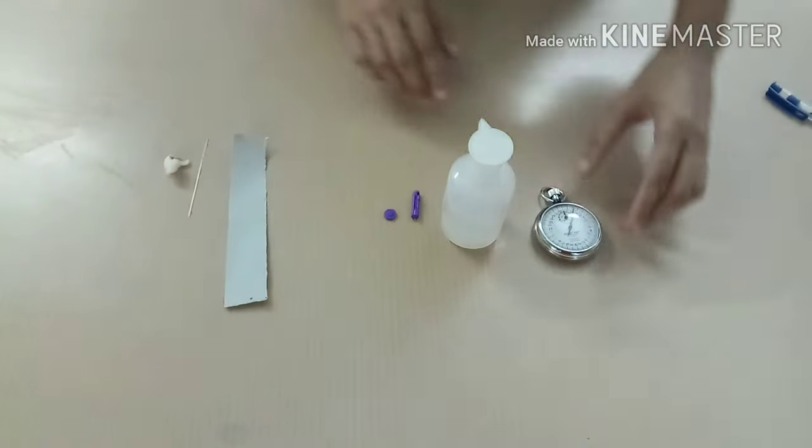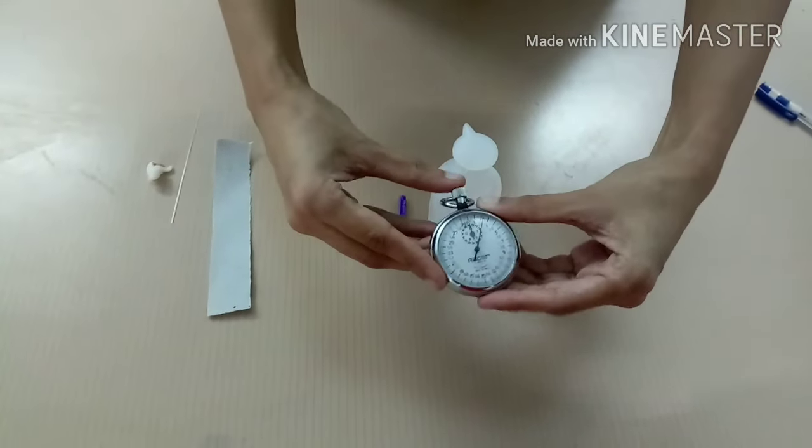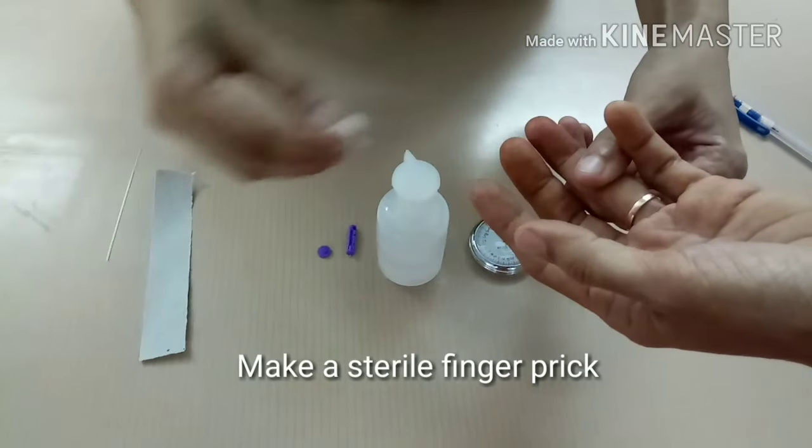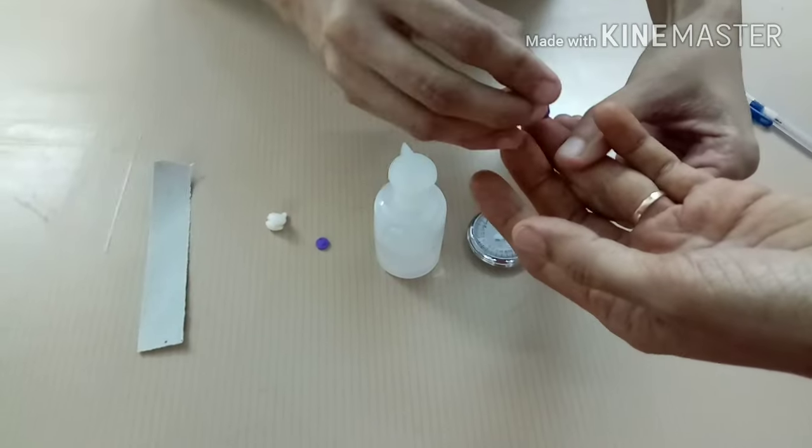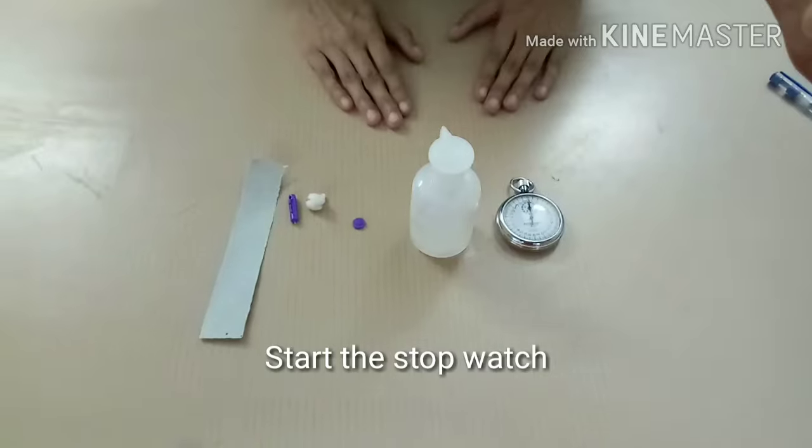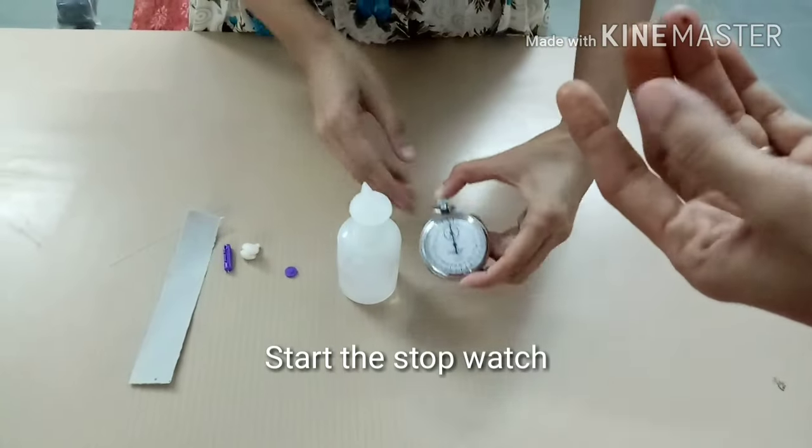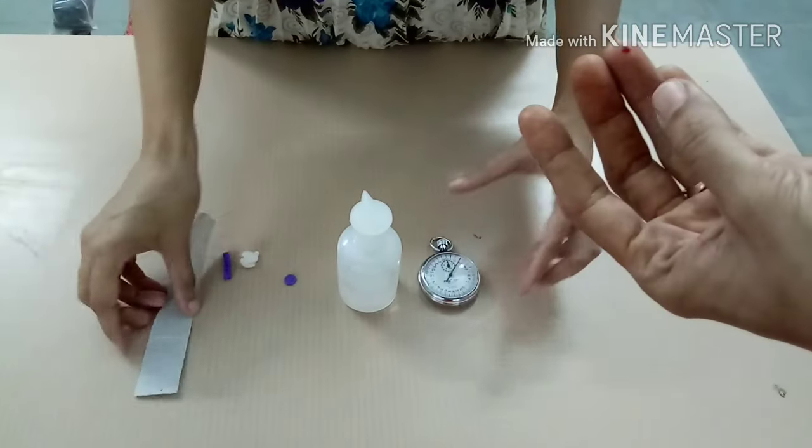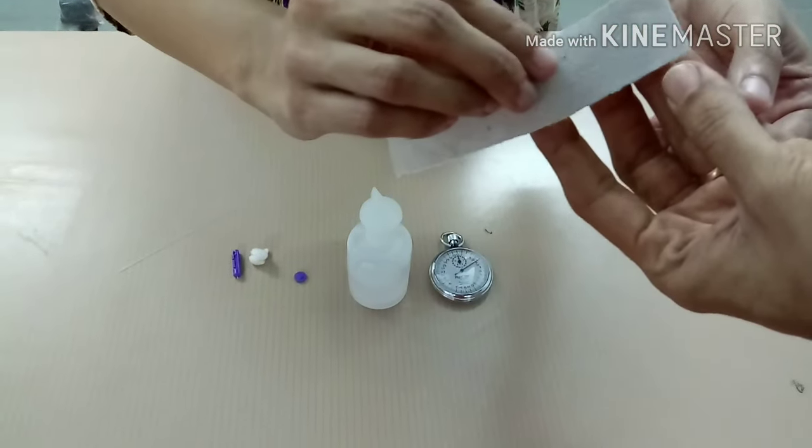Procedure. Set the stopwatch at zero. Make a sterile finger prick about 3-4 mm deep which allows free flow of blood. Immediately start stopwatch and note the time. Apply a filter paper on pricking side. It is zero time.